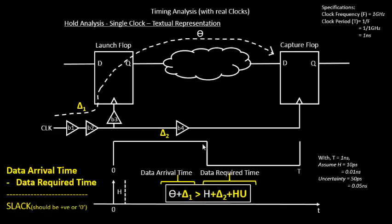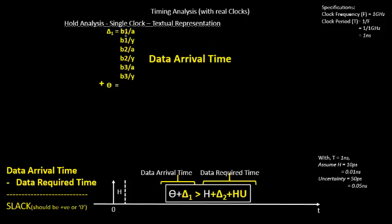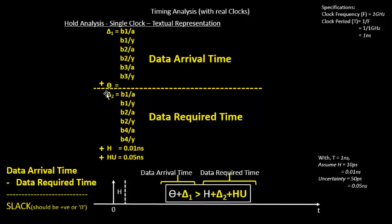In textual format, the data arrival time is δ1 + θ, where δ1 is the sum of all the launch clock path delays. The data required time is δ2 plus the hold time of the capture flop plus the hold uncertainty.